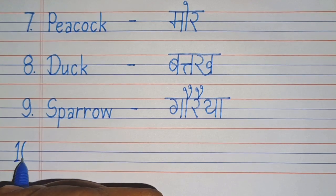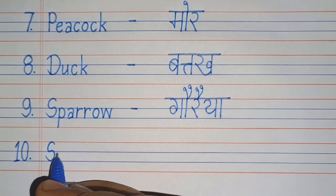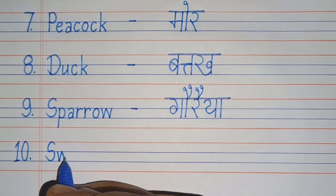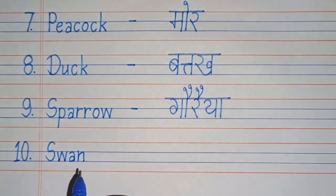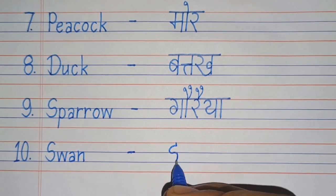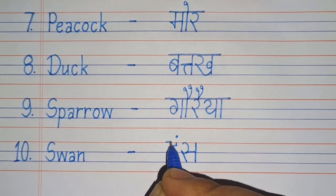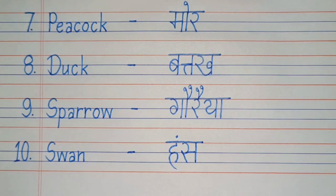Tenth number: S-W-A-N, Swan. Swan means Huns. So dear friends, if you like this video, then subscribe to this YouTube channel. Thanks for watching.